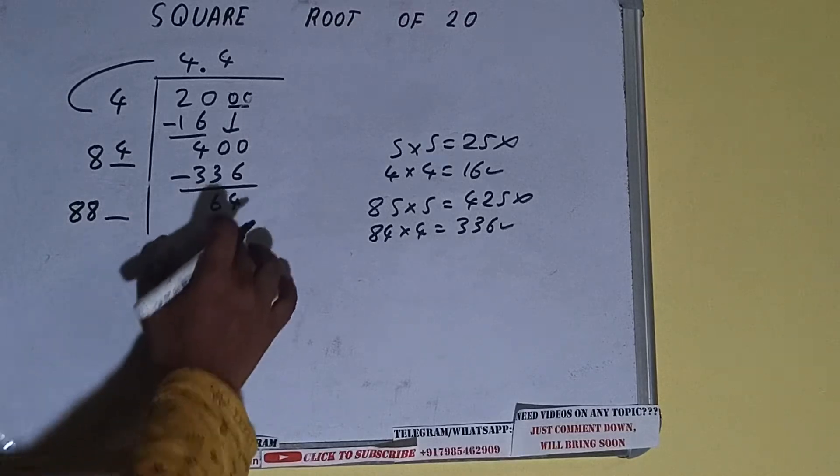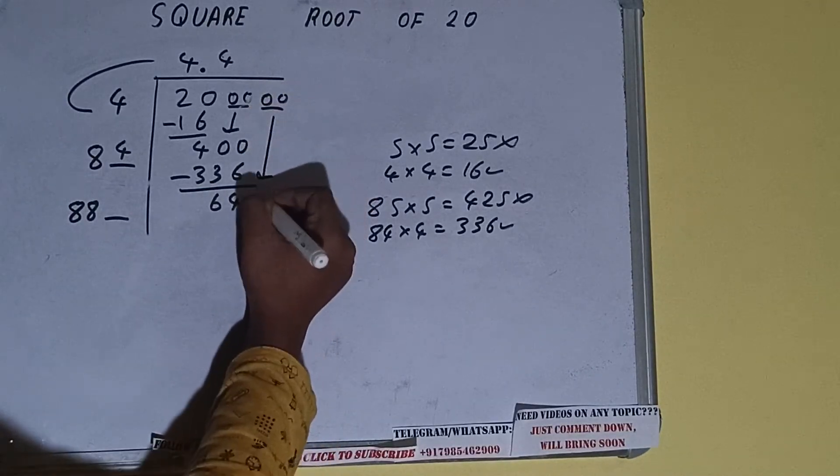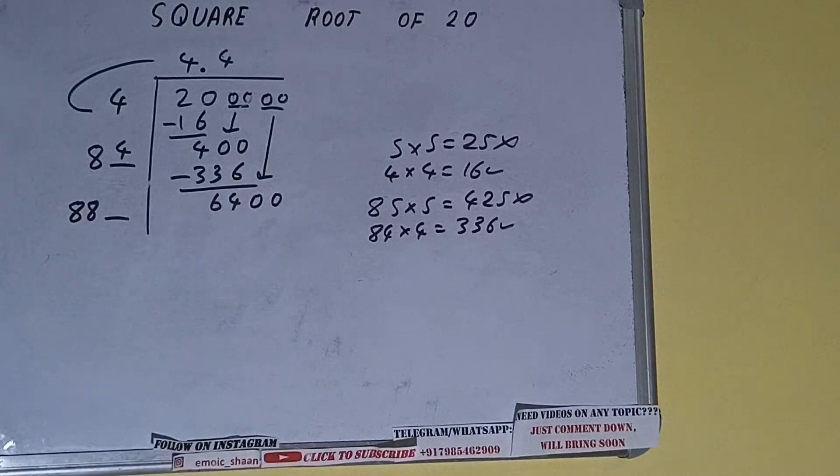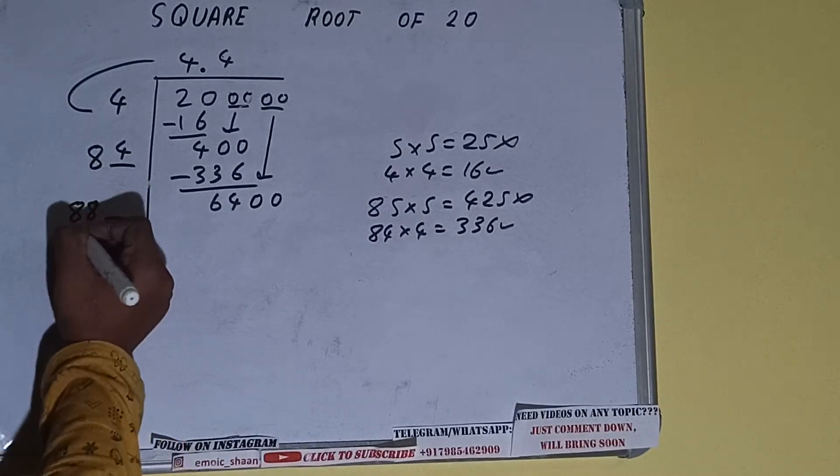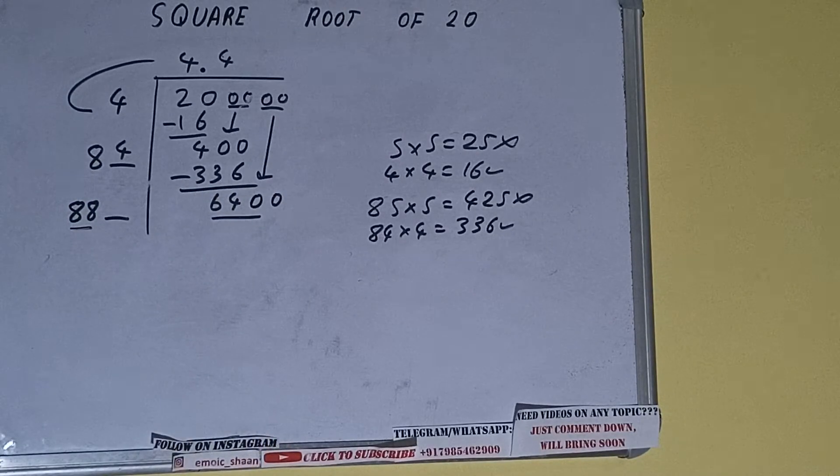Write it here and keep a digit extra, and this number we need to make it big. So bring the next pair of zeros down and the number will become 6400. Now compare this 88 with this 640.